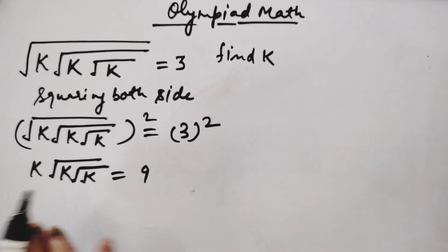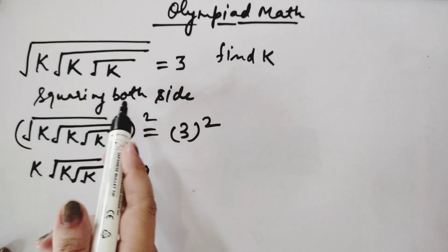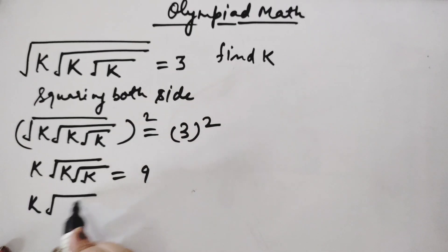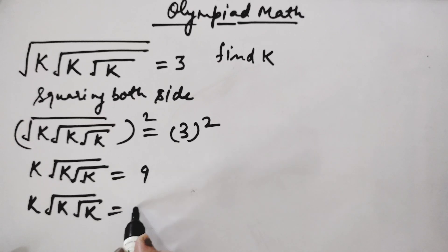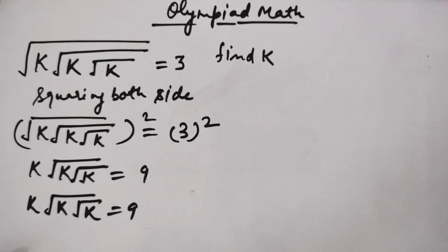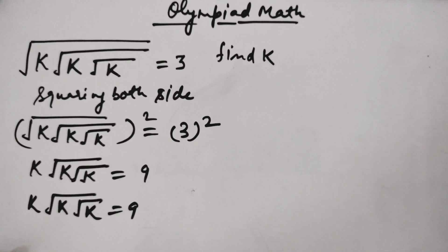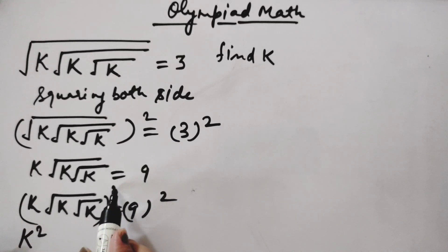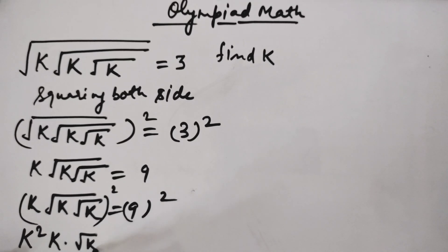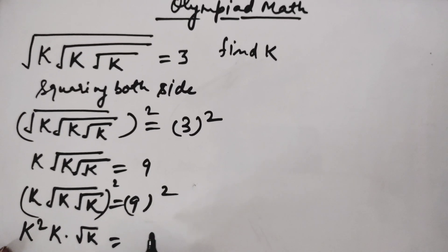We will remove this next square root as well, so we are doing squaring both sides again. This gives k squared, and this square root cancels out by squaring. The remaining square root of k is left as it is. Now 9 squared gives 81.